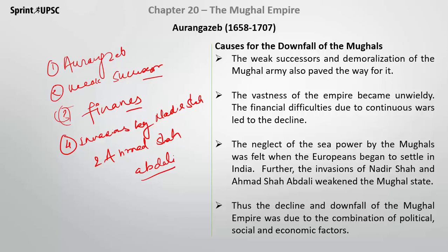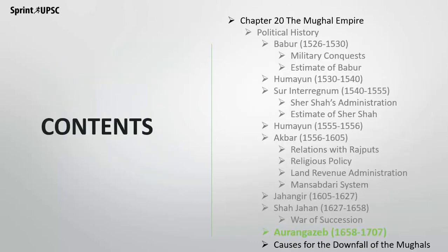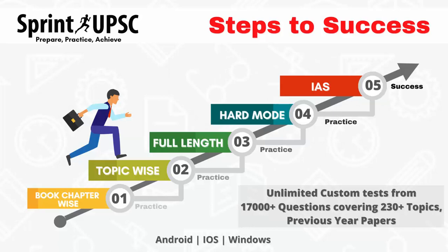To summarize the decline of the Mughal Empire, there were several reasons ranging from political to economic factors. These are all the regions that led to the downfall of the entire Mughal Empire. This completes our discussion of the Mughal Empire chapter.